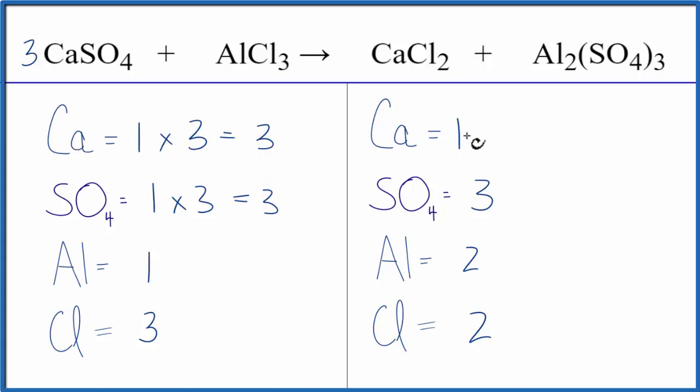Might as well fix the calcium here. We could put a coefficient of three in front of the calcium chloride. One times three. We have three, so now that's balanced, and the chlorine, two times three, and we have six chlorine atoms.